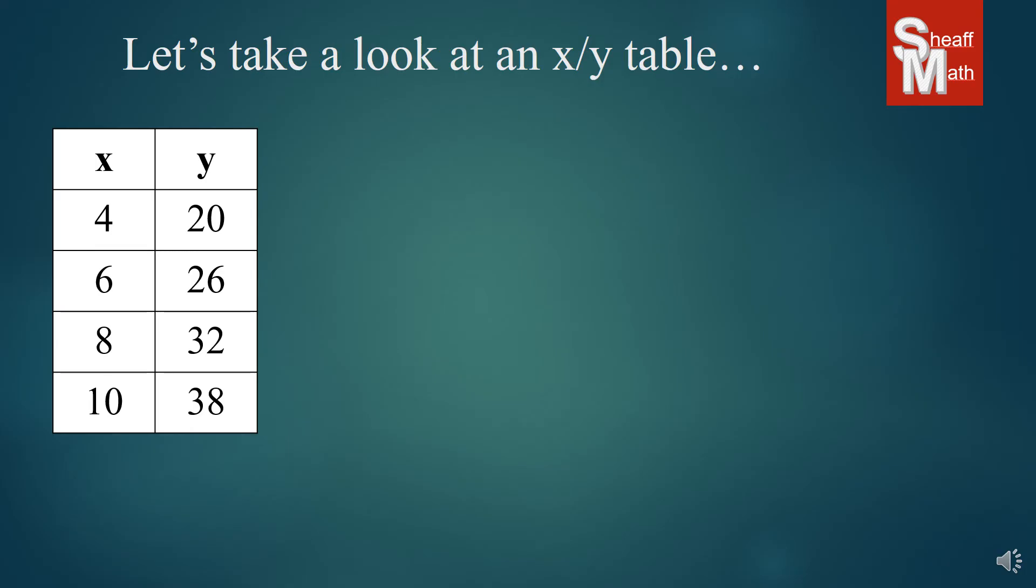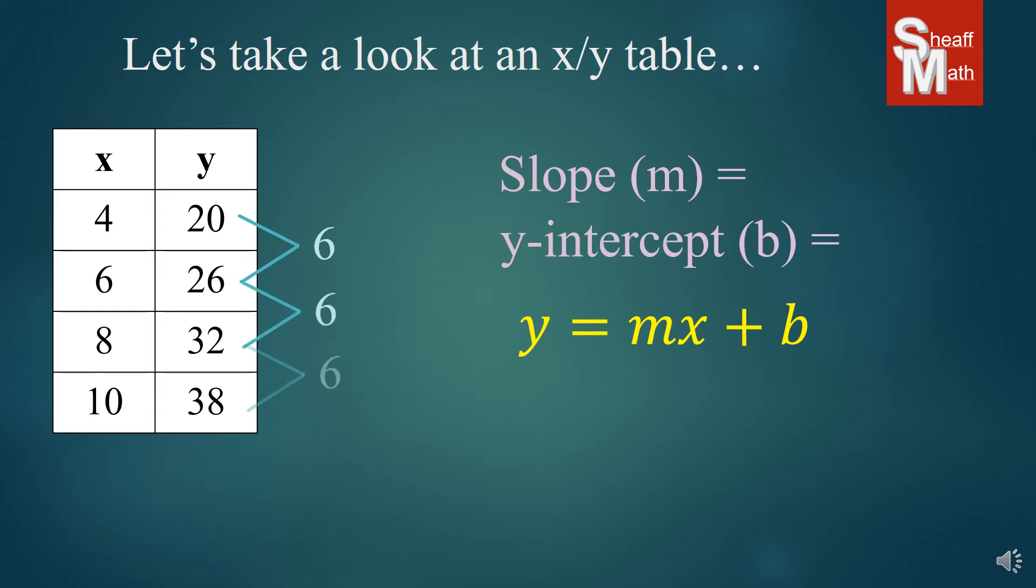All right. Now we have something a little different. So as we do our same method, we are looking at our slope. And it looks like it's going up by 6. But if you didn't notice it, we have a little different problem here. If you look at the x's, they're not going up by 1. They're going by 2's.